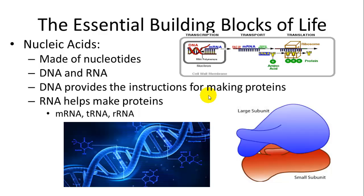Nucleic acids are not really for nutritional needs, but are for storing genetic information and processing that information to make proteins. DNA (deoxyribonucleic acid) and RNA (ribonucleic acid) are the two types of nucleic acids found in all cells. DNA provides the instructions; RNA helps make the proteins. You make RNA from DNA and then use that RNA to put together amino acids to form specific types of proteins. There are three types of RNA important for that process: messenger RNA, transfer RNA, and ribosomal RNA.